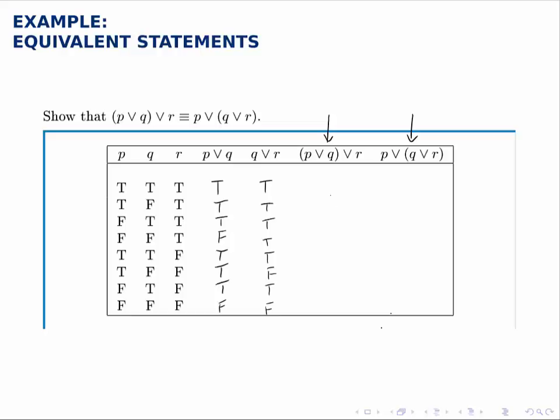For the second to last column, we'll take P or Q which we built and combine that with R using the OR operation. So we'll combine these two columns, again OR says it's true as long as at least one of them is true. So it will be true, true, true, true and then true, true, true, false. The only case where it's false is in the last row when neither one of them is true.